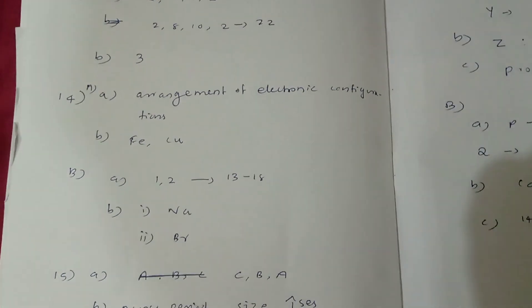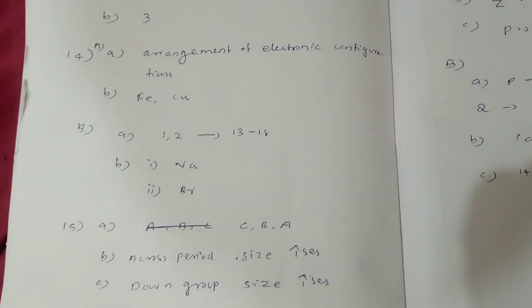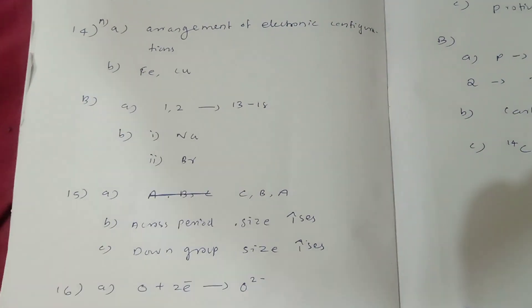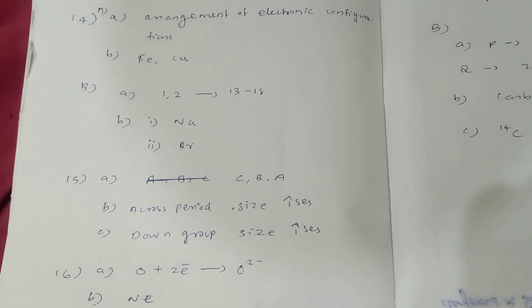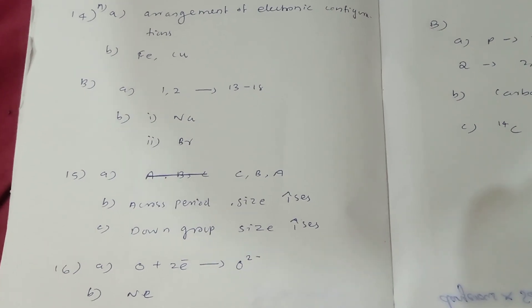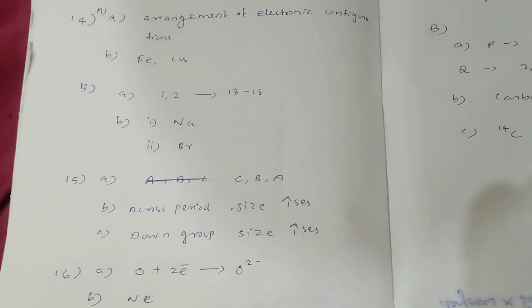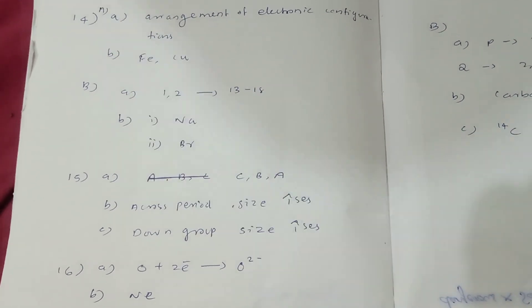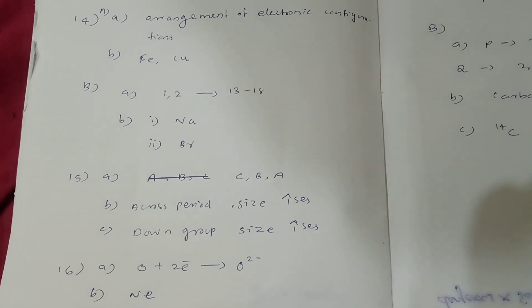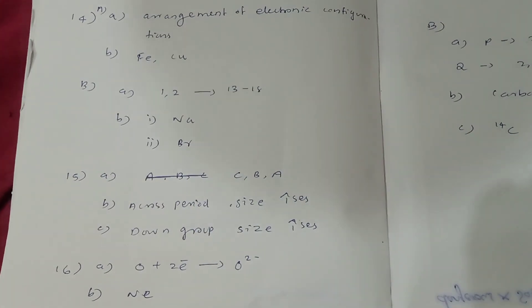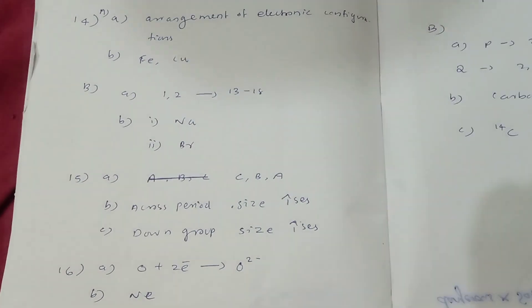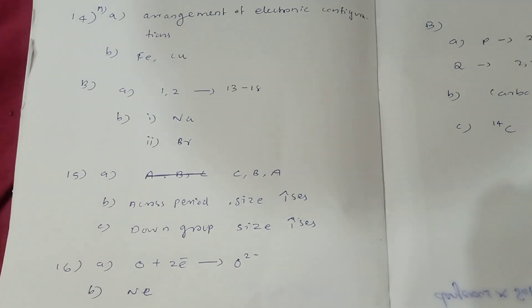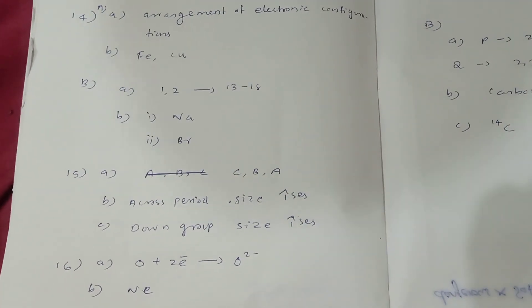Question number 13: A — Arrangement of electronic configurations. B — Fe.